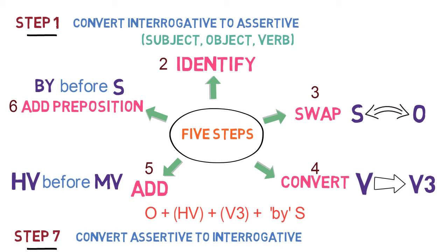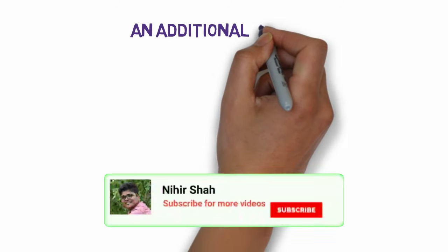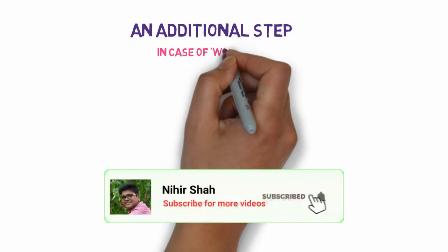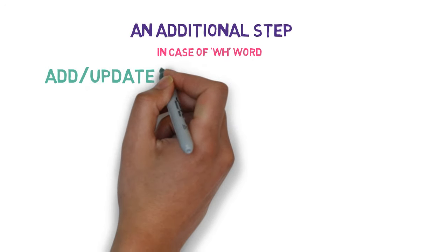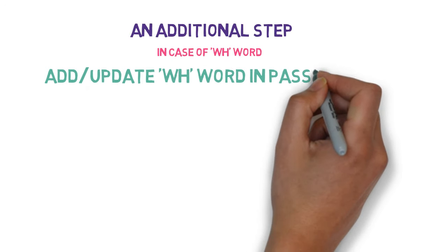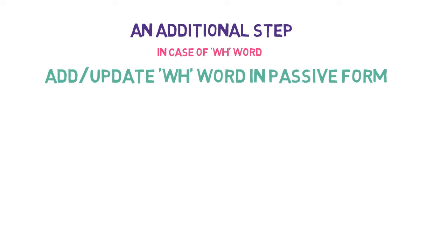Now, let's learn what changes in case the interrogative sentence is in WH form. There are no changes in these 7 steps — we still follow all 7 steps. But an additional step is added in case of a WH word: we have to add or update the WH word in passive form. Let's learn via a chart about the changes in this WH word.